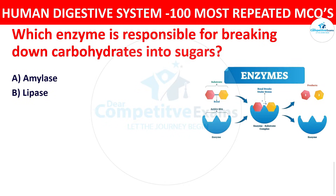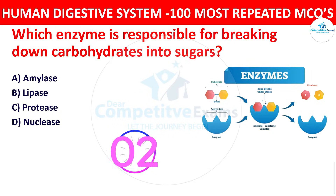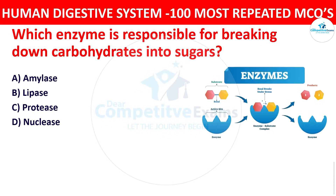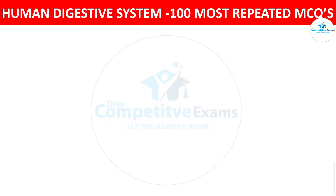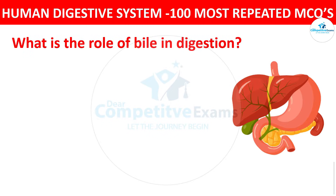Question number three: Which enzyme is responsible for breaking down carbohydrates into sugars? Your options are amylase, lipase, protease, or nuclease. The right answer is amylase. Amylase is an enzyme that breaks down complex carbohydrates into simpler sugars like glucose.